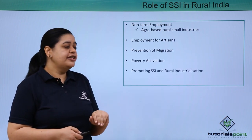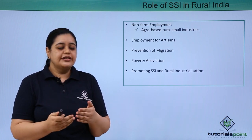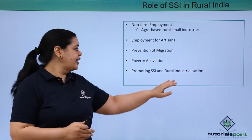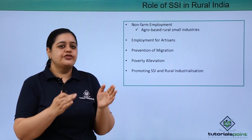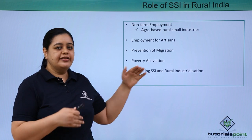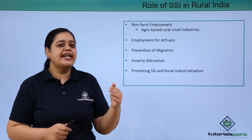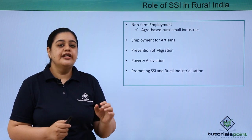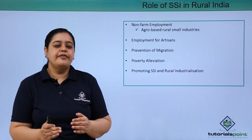Promoting SSI and rural industrialization. Because of poverty alleviation and providing employment opportunities, the industrialization of rural areas starts happening. So when SSI comes in, these are the benefits it provides to rural India, and because of that, rural industrialization takes place at a faster rate. That is the reason SSI also plays an important role in rural industrialization.